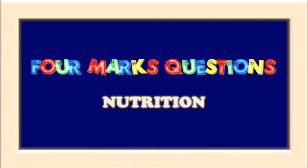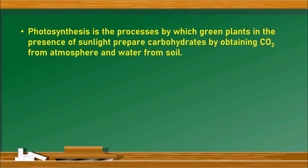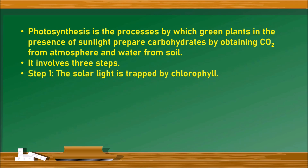Four more questions from the chapter nutrition. The first question is: explain the mechanism of photosynthesis. Photosynthesis is the process by which green plants, in the presence of sunlight, prepare carbohydrates by obtaining carbon dioxide from the atmosphere and water from the soil. There are three steps involved in photosynthesis.